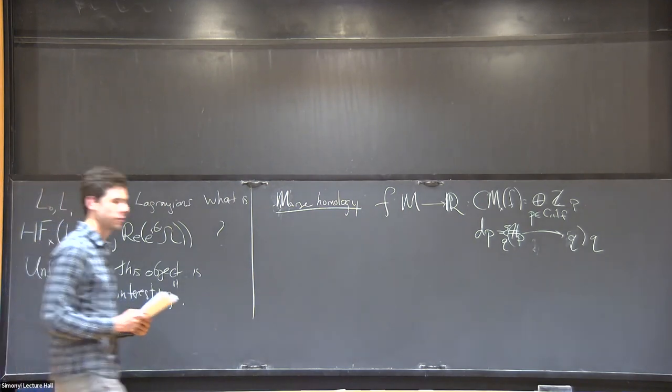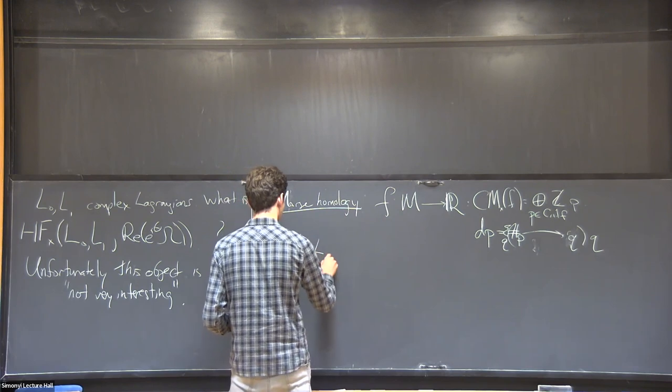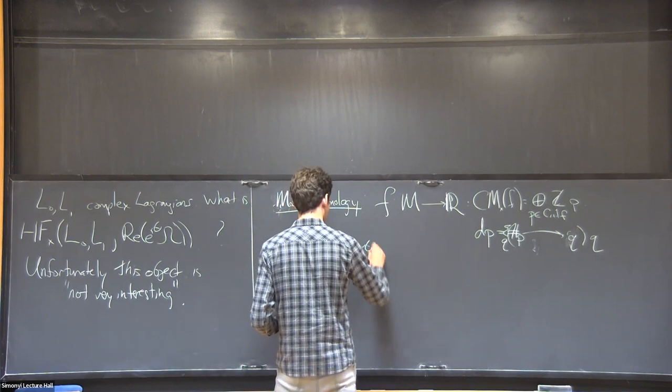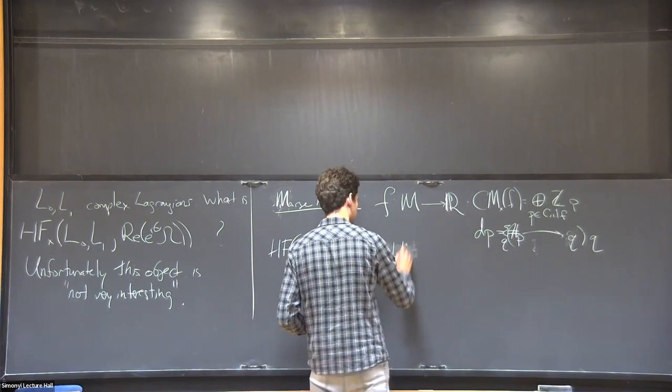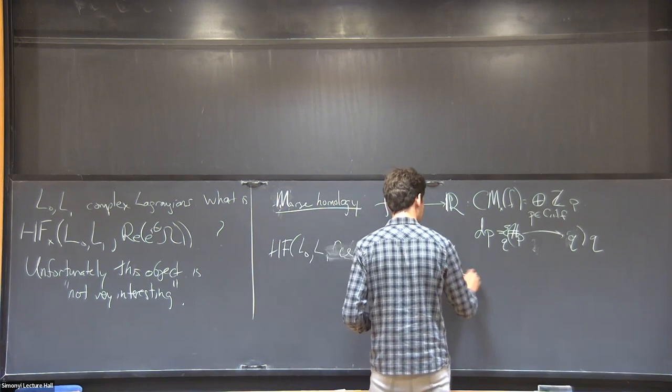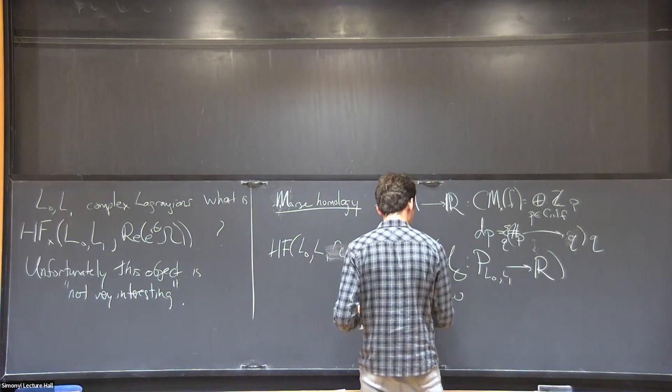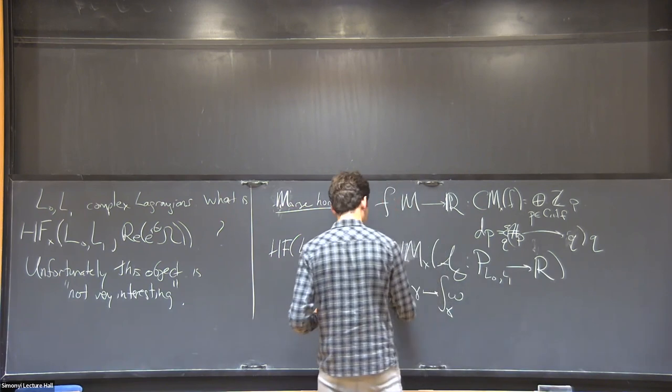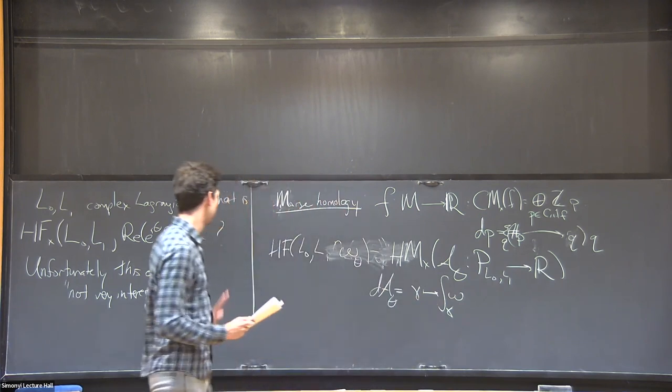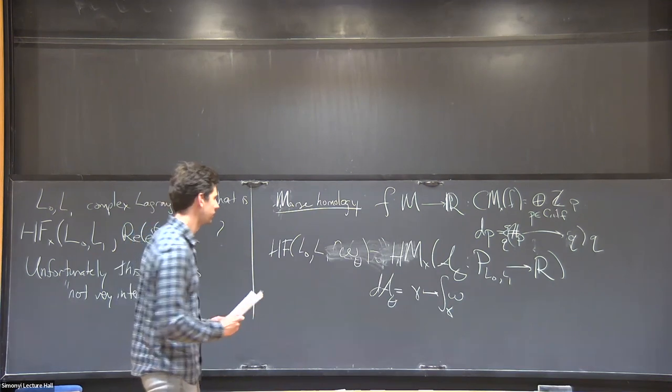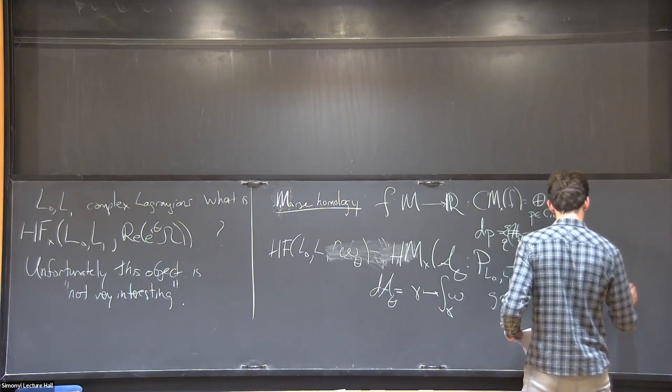This thing is supposed to be a version of Morse homology. So omega_theta, it's supposed to be HM. You can take the homology of this chain complex. This is supposed to be HM of this functional from the space of paths between the Lagrangians. It's just given by: you take this two-form, the symplectic form, and you integrate it over a path—or rather, that's the differential of this function, it's the one-form on the space of paths. If you have a one-form, you can define its gradient flow.